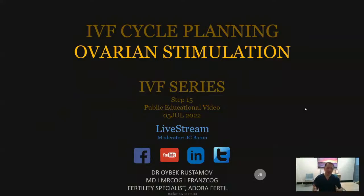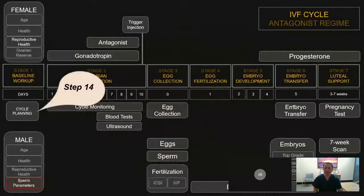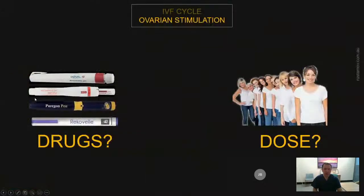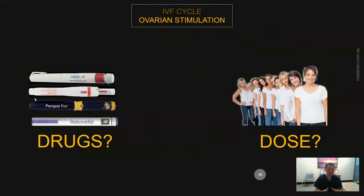We are moving into a much more exciting part of IVF treatment. Today we will be discussing ovarian stimulation — we are still on the cycle planning stage, which is actually the stage before the IVF cycle. One of the steps of this stage is deciding what kind of drugs to use for ovarian stimulation and deciding what dose to give to each patient. We have to individualize the drug and dose for each patient.